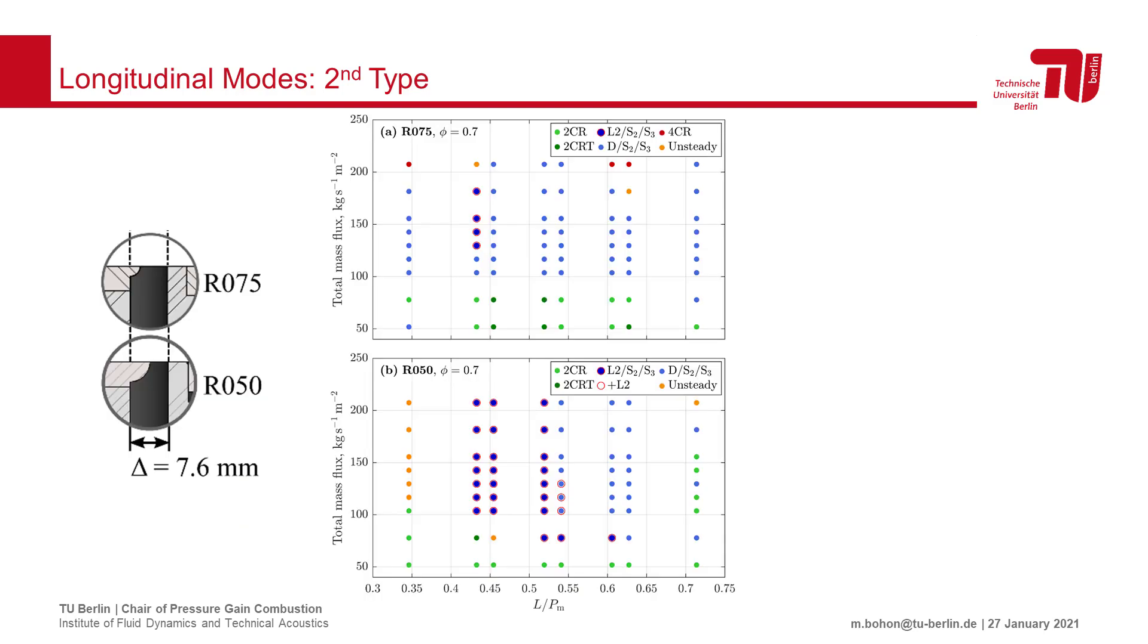As before, we then follow the same variation in combustor length, shown as length over perimeter, as well as combustor outlet geometry. We repeat this for a range of reactant mass fluxes.